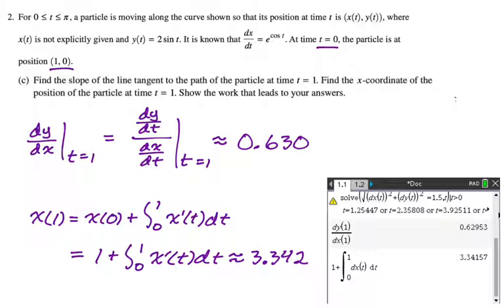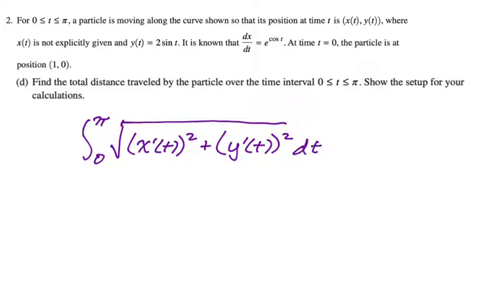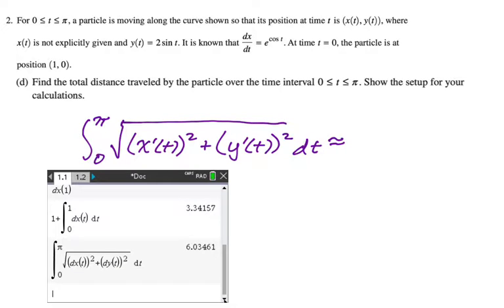All right, let's look at part D. Find the total distance traveled by the particle over the time from 0 to pi. Show the setup for your calculations. If there's a parametric question, you are going to be asked to find this. So make sure you are prepared for it. That's going to be the integral of speed, so from 0 to pi of the square root of x prime of t squared plus y prime of t squared, and then finish off that radical and dt. And it's calculator. So go to the calculator and we can see we get 6.035. And that's the entire question.